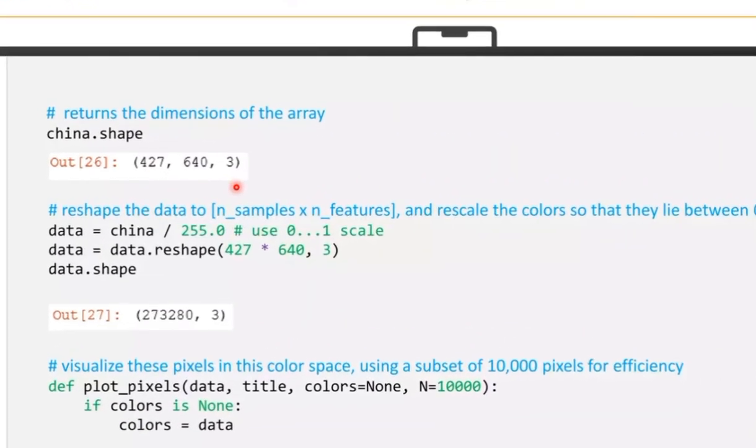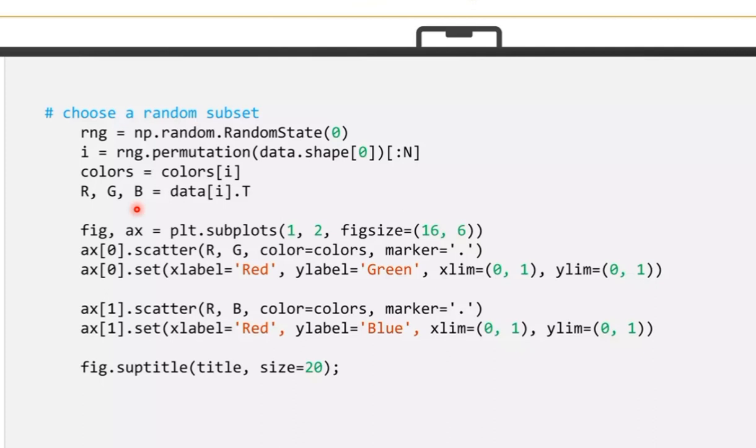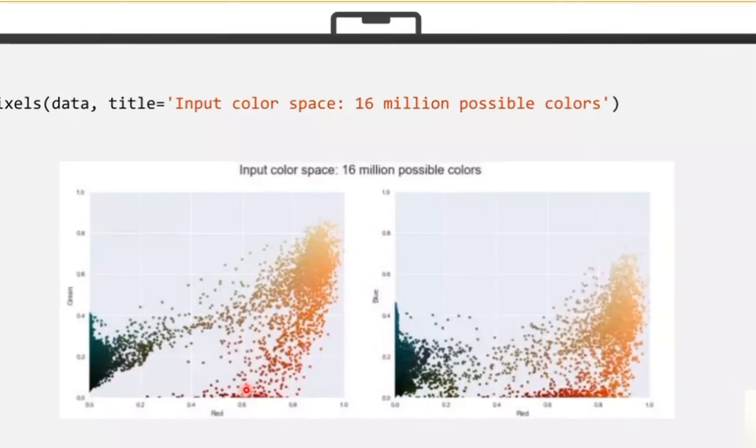Return the array dimensions. Then we have to reshape the data, then rescale that data. We have to visualize these pixel values in this color space with a subset of 10,000 pixels for efficiency. Color image is a combination of red, green and blue. Each color is represented by 8 bits, so totally we are having 24-bit representation. In the x-label and y-label, first we plot the red and green. Then in the second plot we have red and blue. Here we have plotted the pixels. Totally in this color image we are having 16 million possible colors.